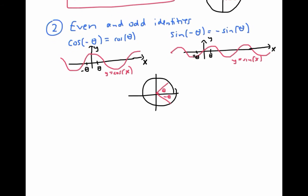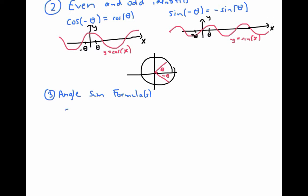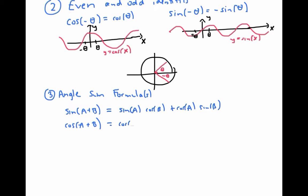My third favorite trig identity is the angle sum formula. There are really two — one for sine and one for cosine — but they go together, so I'll consider them a single identity. These identities are easy to remember because there's a song that goes with them. The song goes: sine cosine, cosine sine — for the sine of a plus b; and cosine cosine minus sine sine — for the cosine of a plus b. The only thing you have to remember is that the song gives the sine of a plus b first, and then the cosine of a plus b.